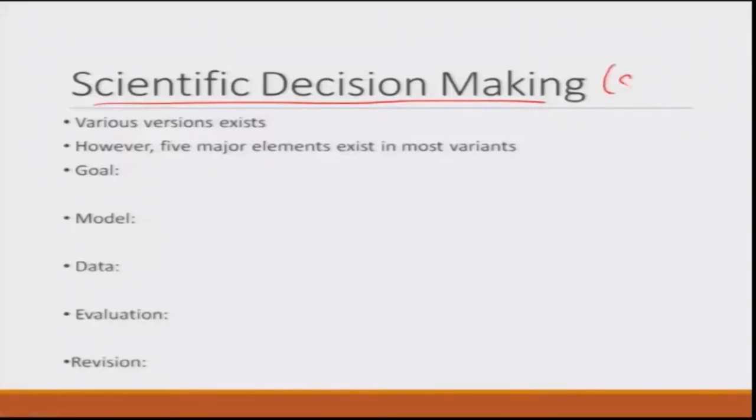All these factors influence the decision maker's beliefs, which translate to the decision. When you have reliable data compatible with the world view, prior knowledge or hypothesis available, and consequences of accepting or doubting are clearly articulated, the decision maker tends to make better rational decisions. Now let us talk about the scientific decision making process — SDM. There are many versions with different views, but almost all contain five major elements.